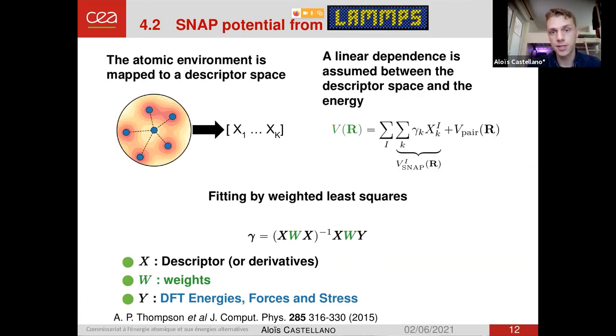For the machine learning potential, I use the SNAP potential, spectral neighbor analysis potential from LAMMPS. A very quick description of how this works. For each atomic environment of one atom, we describe, we map this environment into a descriptor space, which is a vector of fixed length. And then we just assume that there is a linear dependence between the descriptor space and the energy. So the potential is written as the sum over atoms of the descriptor space times a coefficient gamma. And this is those coefficients that we will adjust to create our potential. And the thing with the method I'm presenting here is that the fit is done by weighted least squares. That means that when we are doing the fitting, we are including the weights. So the weights that are the Boltzmann weights, the weights that we are concentrating all along the simulation.